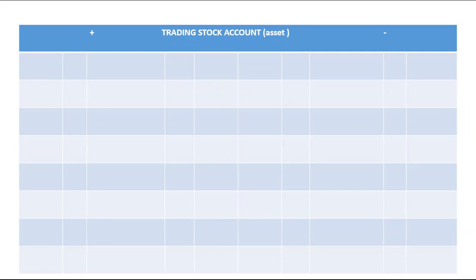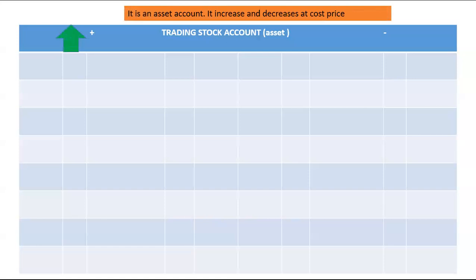Trading stock is also an asset account. It represents merchandise or goods that were purchased in order to resell at a higher price. Trading stock will be recorded at cost price, and just like any other asset, it will increase on the debit side at cost price and decrease on the credit side at cost price. The balance of your trading stock account will be on the debit side — for example, a balance of 40,000 on the 1st of May 2020.